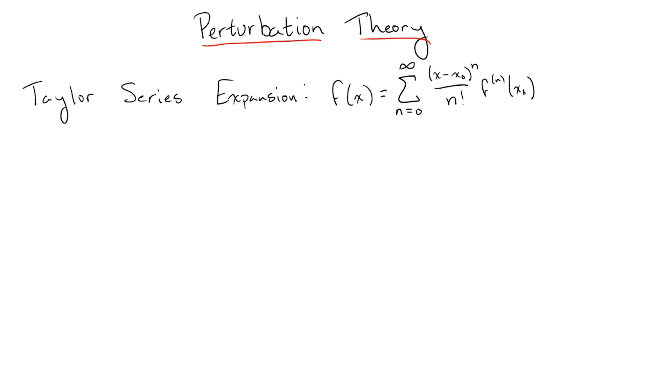Perturbation theory works by taking some small value that appears in the field theory we are using, like a unitless coupling constant or a mass ratio, and expanding the result we want to find into an infinite sum of terms, each proportional to a higher and higher power of this value.